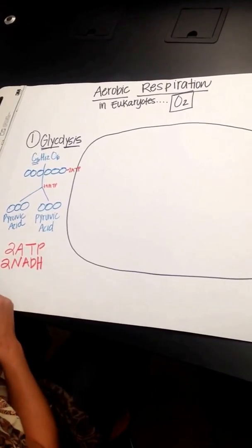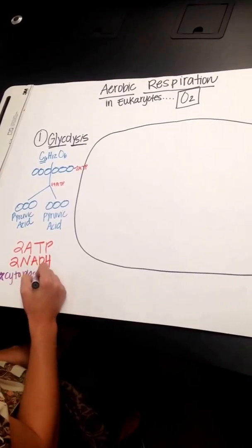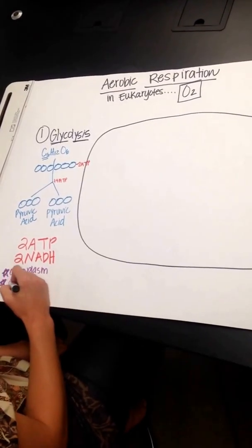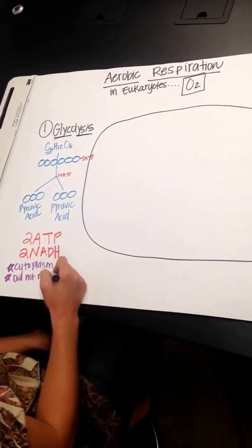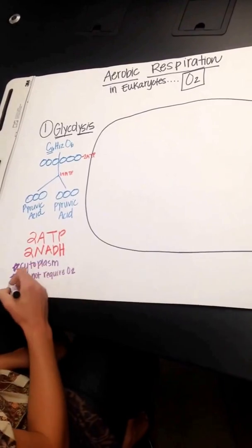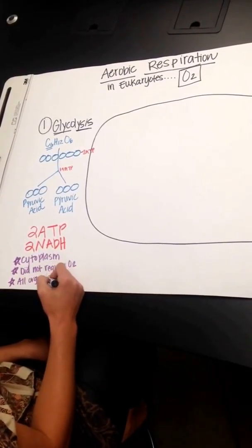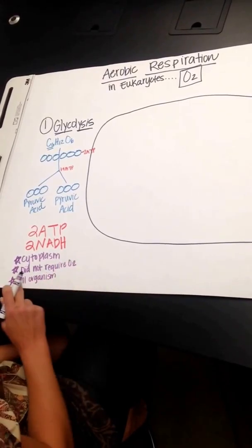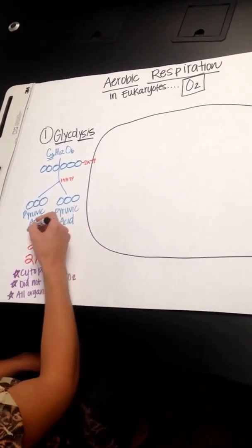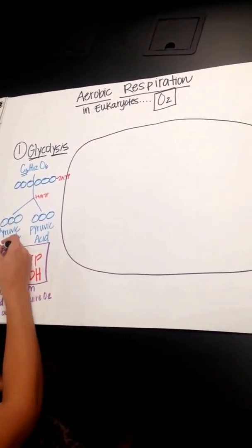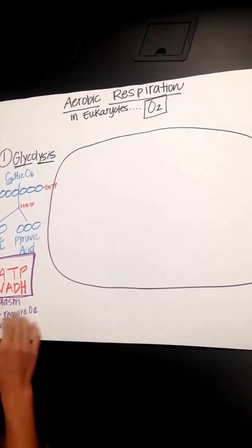A couple things you want to know here. It occurred in the cytoplasm. This process did not require oxygen. And all organisms on Earth performed this. So all organisms performed this. It did not require oxygen. It happened in the cytoplasm. And you made two ATP and two NADH in the first step of cellular respiration, which is glycolysis.